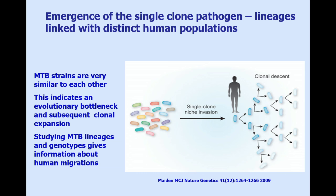Because of that co-evolution, just by finding out what type of TB is present in a past population, it can tell us about human migrations. We can learn about what humans were doing by looking at their infectious pathogens.